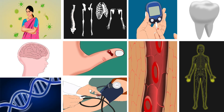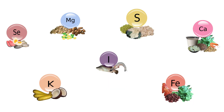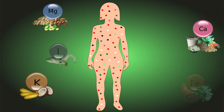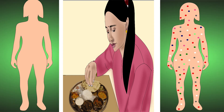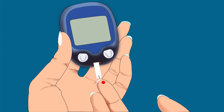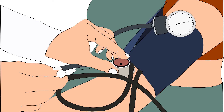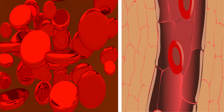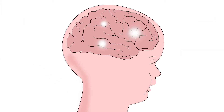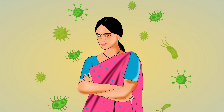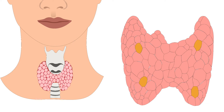Let's understand why minerals are necessary in our diet. Minerals are essential nutrients — we require them in small quantities for good health. Our body does not produce minerals by itself, hence they have to be taken through diet. Minerals are required for blood clotting, maintaining blood sugar and blood pressure, and production of hemoglobin and red blood cells. They also contribute towards muscle contraction, brain development, strong immunity, and production of thyroid hormones.